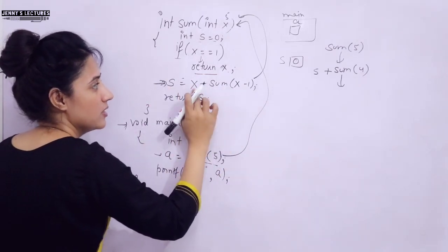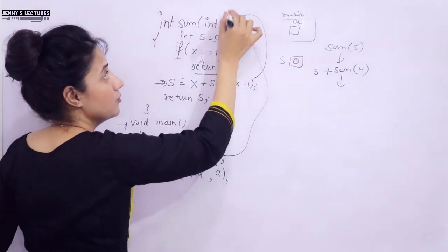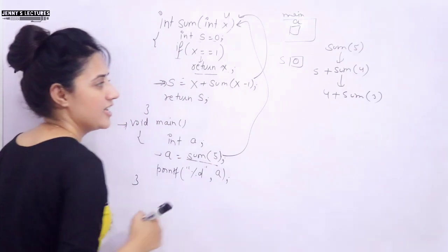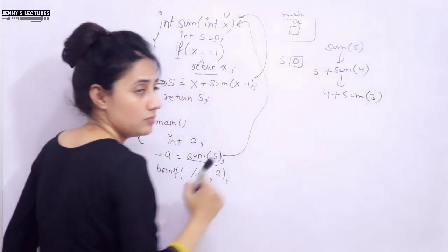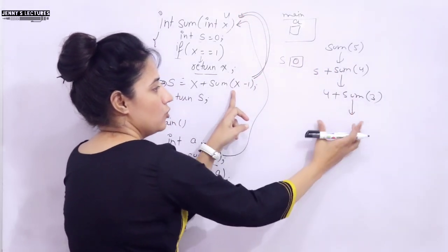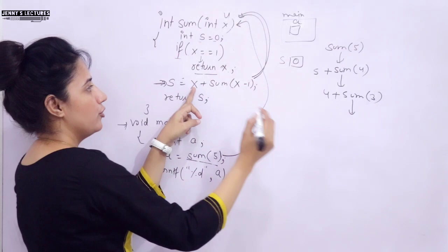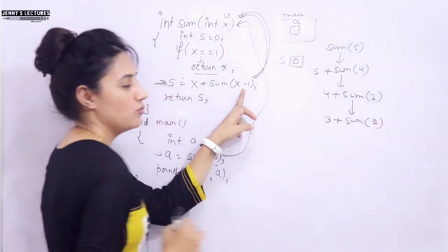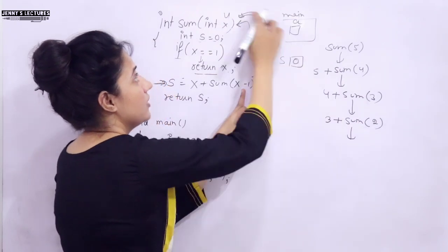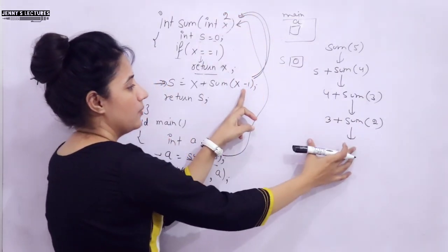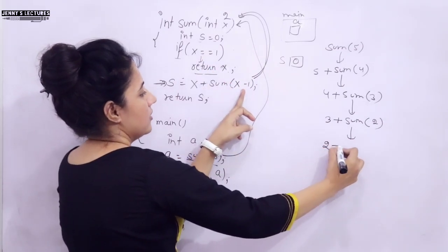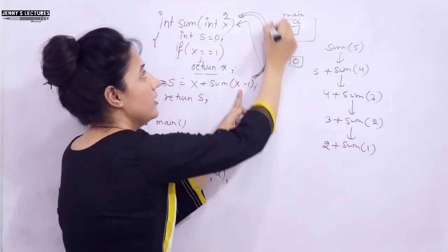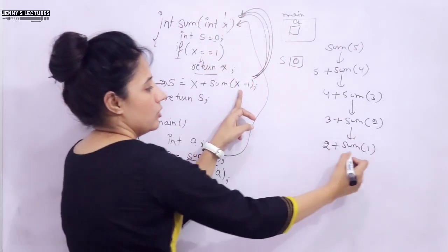We call the function again. x is 3, condition is still not true, so we execute 3 + sum(2). Now we call again with 2. x is 2, condition not true, so we execute 2 + sum(1). Now we are passing 1, so we call sum(1).